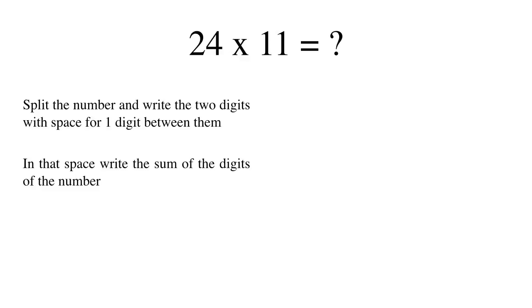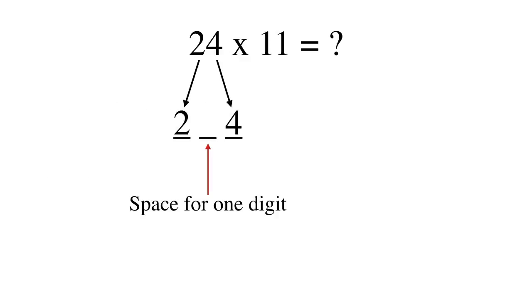So in the present case we write 2 and 4 with one digit separation between them. In that space we write the sum of the digits 2 and 4 which would be 6. So 24 times 11 is equal to 264.